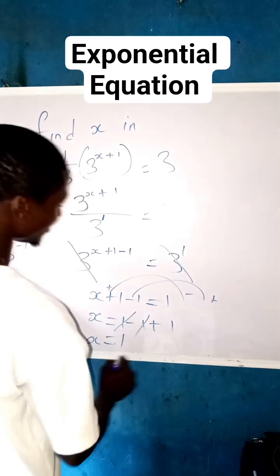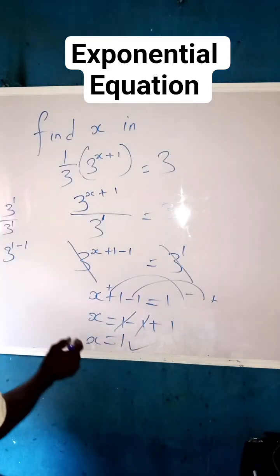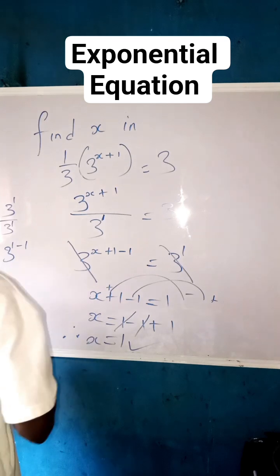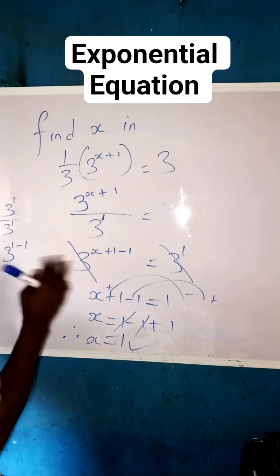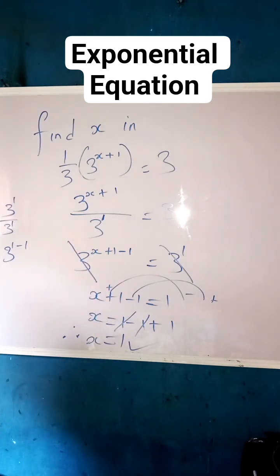Zero plus one is one, so this is our final answer. X is equals to one. If you have not subscribed to my channel, don't forget to subscribe for more video tips. Thank you and God bless you.